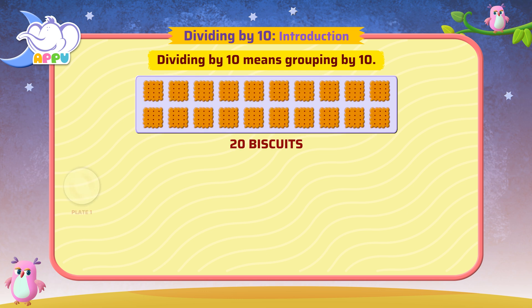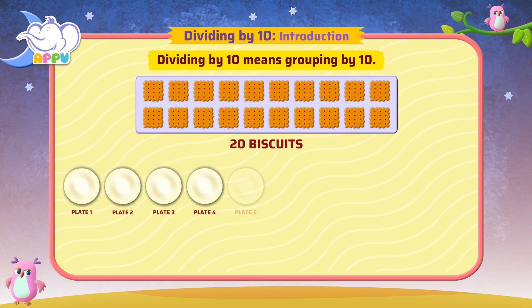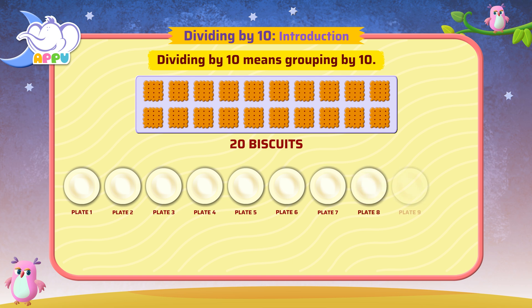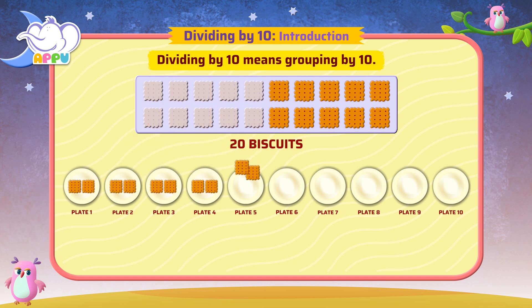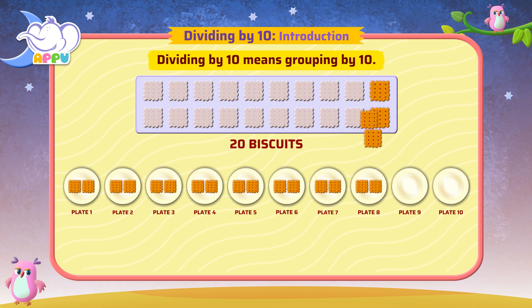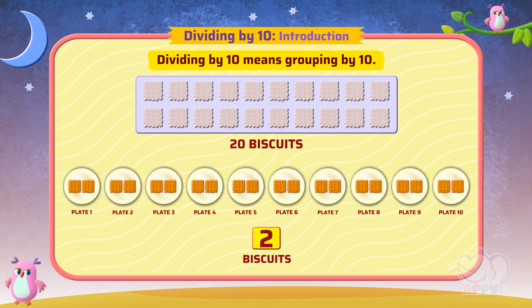Let's divide 20 biscuits in 10 plates. What do we get? We get 2 biscuits in 10 plates. So the answer is 2. We divide by 10 when we want to group objects equally in 10 groups. Exactly right!